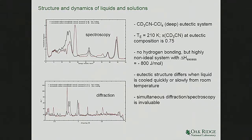Another interesting eutectic system is acetonitrile and carbon tetrachloride — again highly non-ideal, with excess enthalpy of about −800 J/mol. The eutectic structure differs depending on whether the liquid is cooled quickly (quenched in liquid nitrogen) or slowly from room temperature. The diffraction shows the final structures are very different, and this difference in structure is also reflected in the neutron vibrational spectrum.